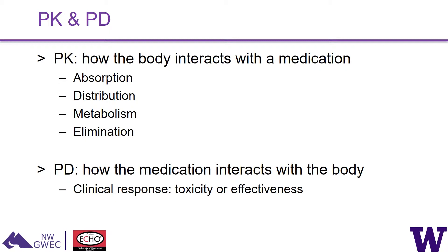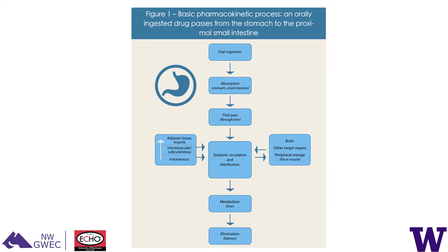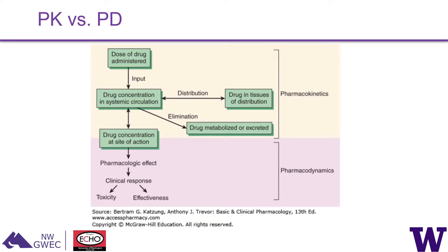In PK there are four main steps — the acronym ADME: absorption, distribution, metabolism, and elimination. PD reflects the clinical response, either effectiveness or toxicity. A simple pharmacokinetic figure shows an orally ingested drug being absorbed, undergoing first-pass in the liver, entering systemic circulation, being distributed, metabolized by the liver, and eliminated most commonly by the kidneys.